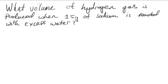In this video I'm going to be working out the volume of a gas produced from a reaction. What I've been given in this particular example is the mass of one of the reactants. The question says: what volume of hydrogen gas is produced when 15 grams of sodium is reacted with excess water? So the first thing I'm going to want to do here is write out a balanced equation.